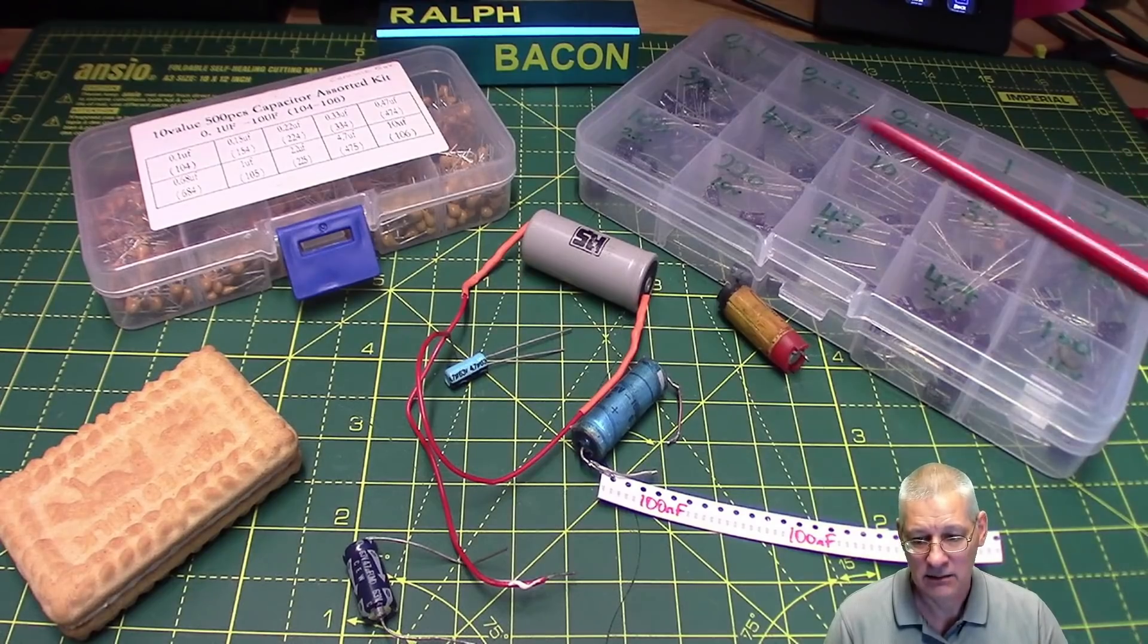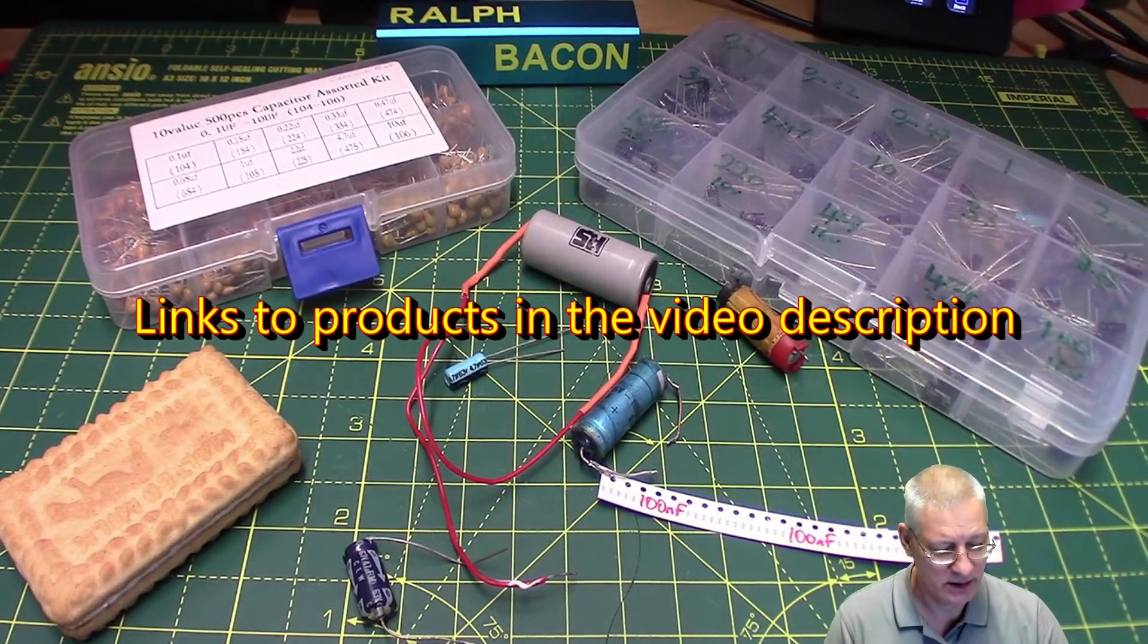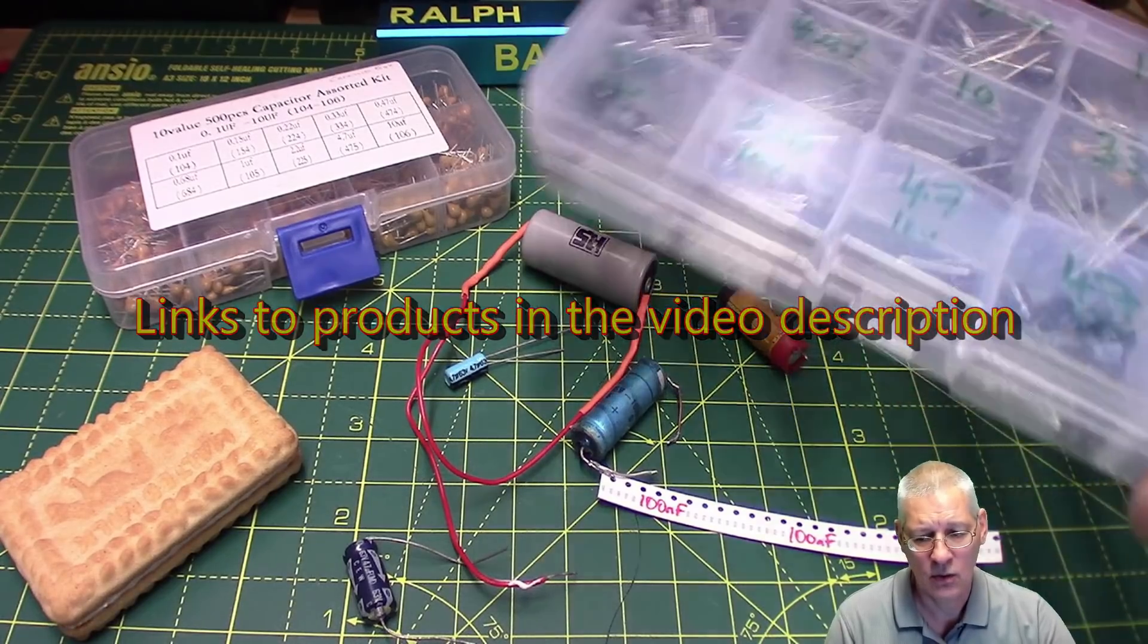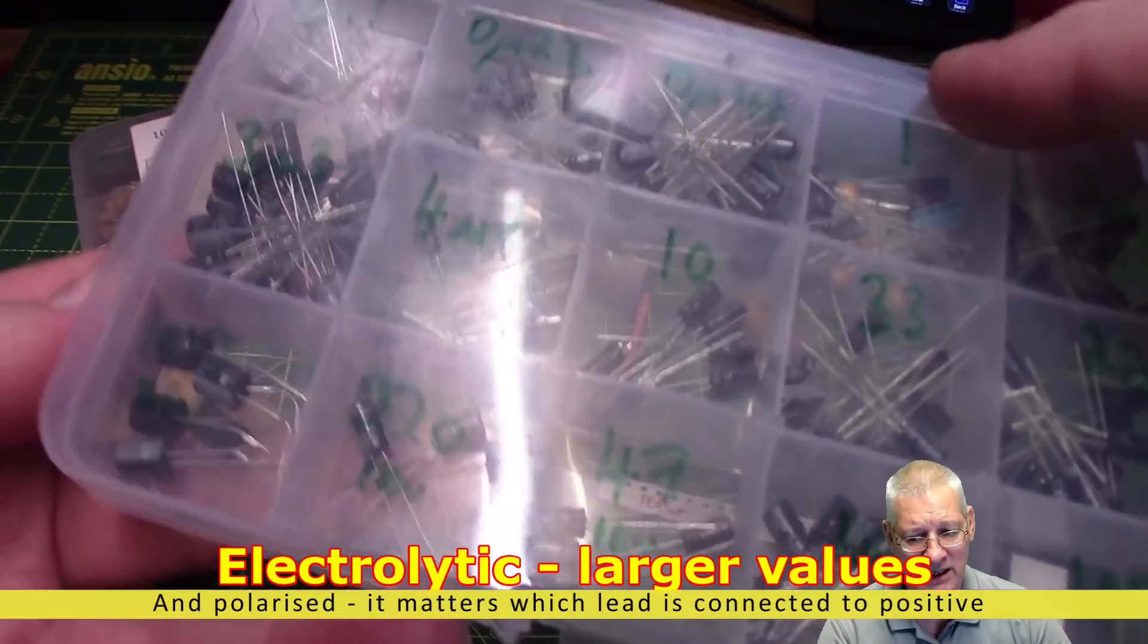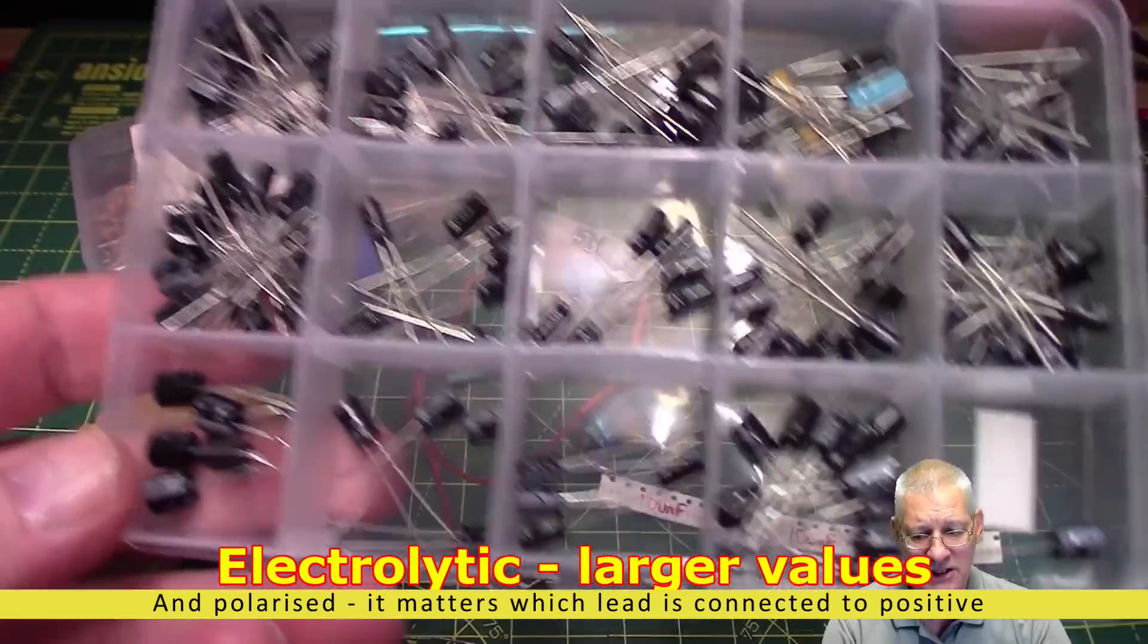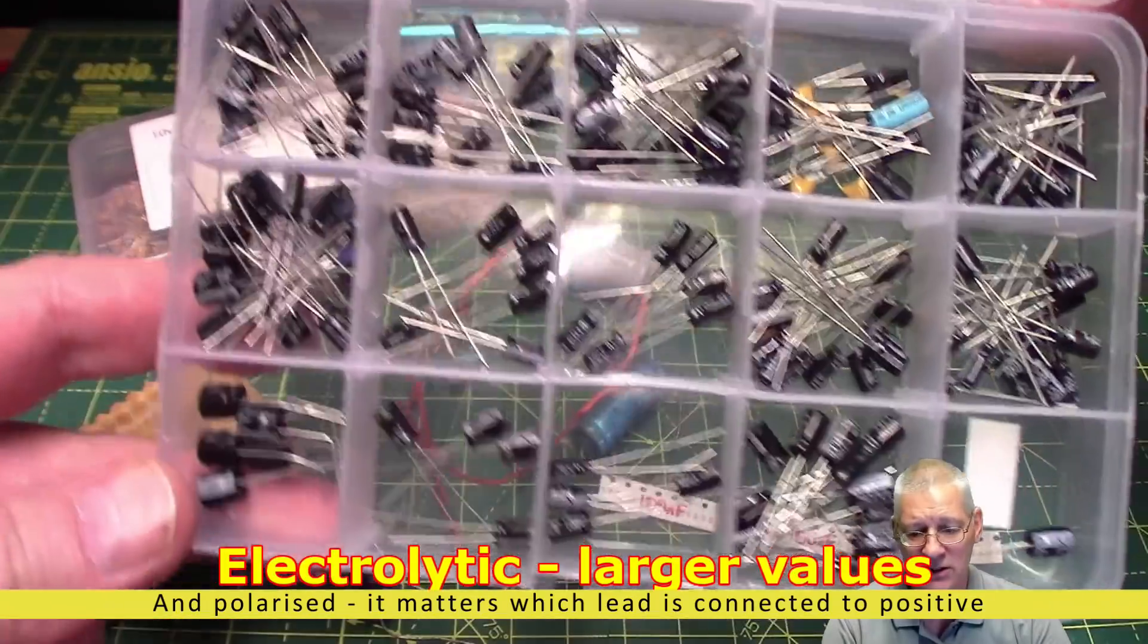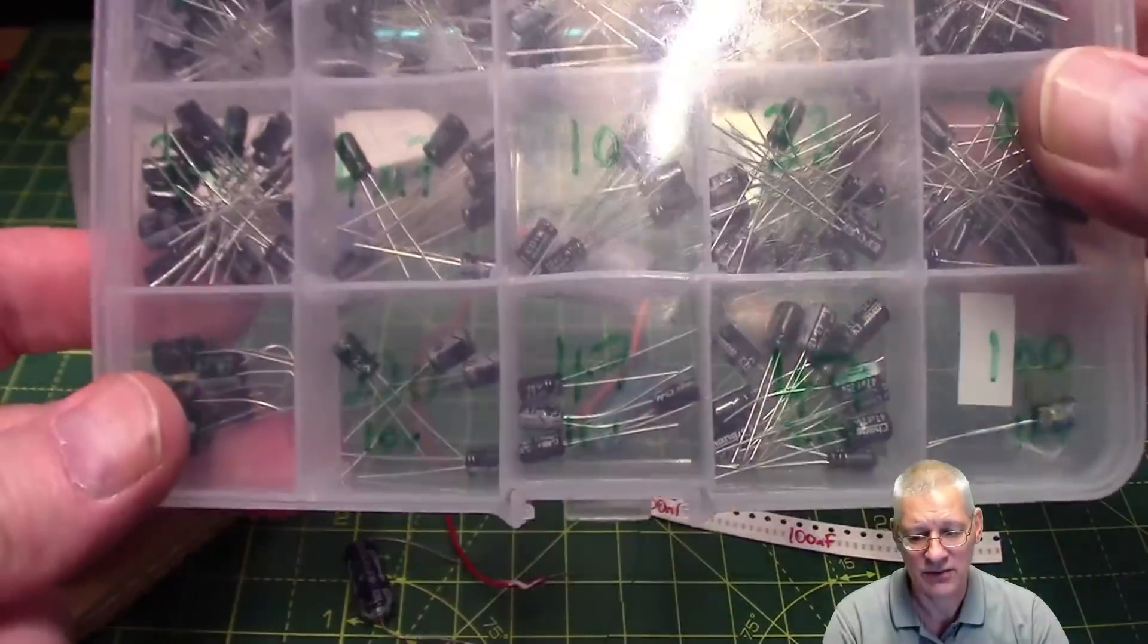Now today, you'd probably end up with a selection of capacitors like these two boxes I've got here. The ones on the right are all known as electrolytic capacitors and have larger values. As you can see, there's a fair old range in there, and I've used these for a few months now. So they're slowly going down, but they really are useful.